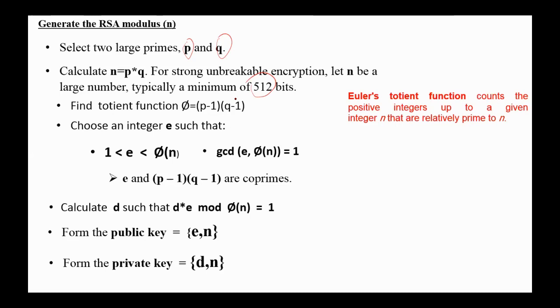Next, we find the totient function phi, which is p minus 1 multiplied by q minus 1. Next, we choose an integer e such that e is greater than 1 and less than the totient function, and the greatest common divisor of e and the totient function is 1. So e and the totient function are co-primes.